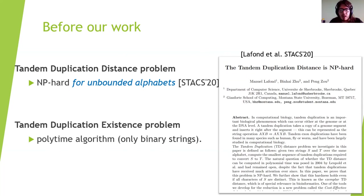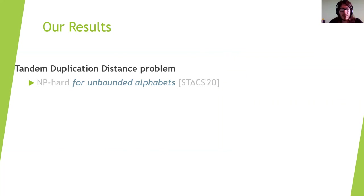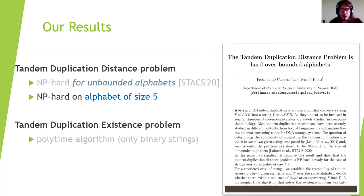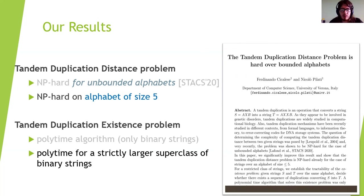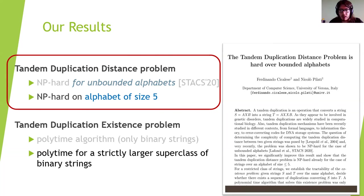For the tandem duplication existence problem, we know that only for binary strings do we have a poly-time algorithm, and nothing is known for larger alphabets. Our results: first, we showed that TD-dist is NP-hard not only for unbounded alphabets but also for bounded alphabets of size 5 or more. Regarding the tandem duplication existence problem, we showed there is a poly-time algorithm for a strictly larger superclass of binary strings. In this talk, we will focus only on the first result, which is also the main one.